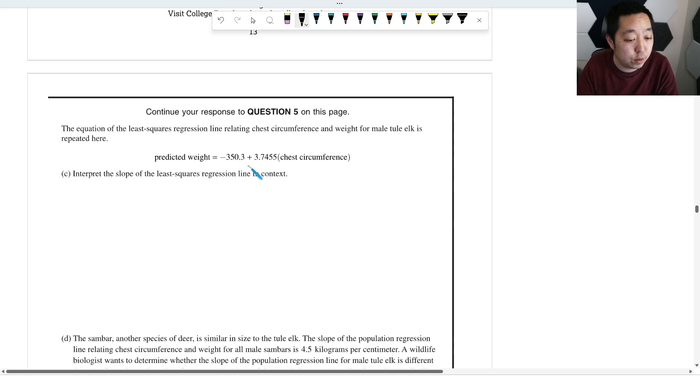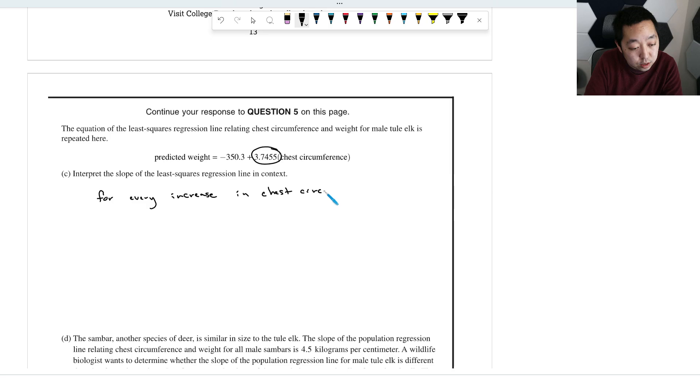Okay. The equation of the least squares regression line relating chest circumference and weight from the male tule elk is repeated here. Interpret the slope. Slope is always for every increase by the x variable by 1, increase in chest circumference by 1 centimeter, the predicted weight of the male tule elk increases. We say increases because it's positive. If it's negative, it decreases by 3.7455 kilograms. That's a standard way we interpret slope. For every increase in the x variable by one unit, put the unit in there. I think the unit's important just to get the full context.